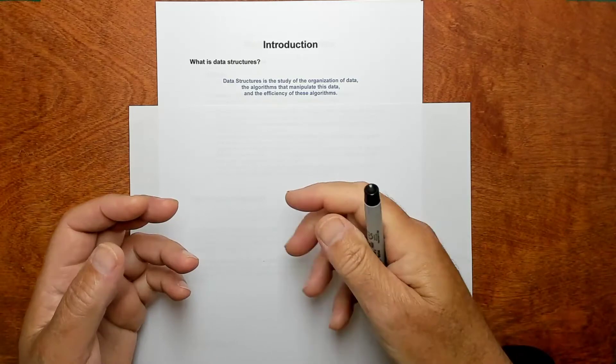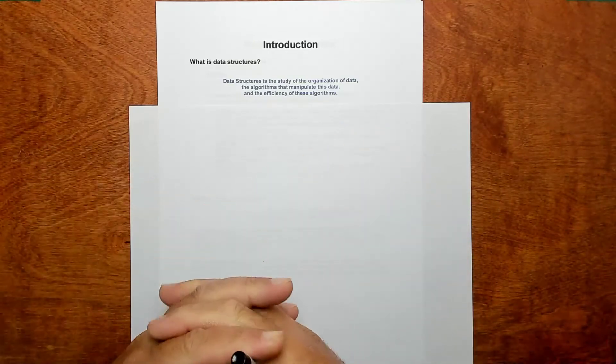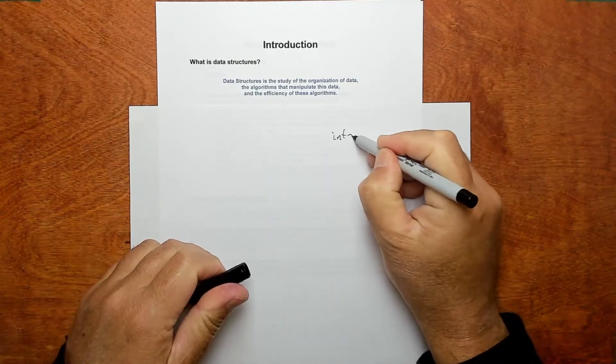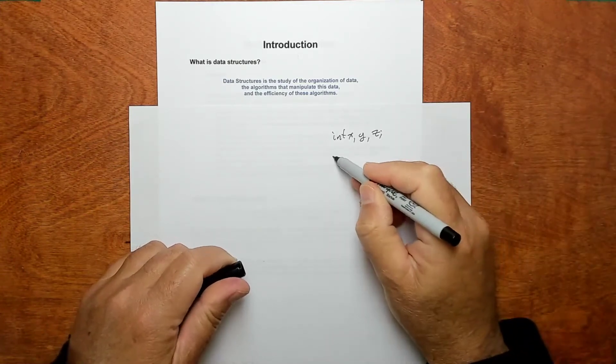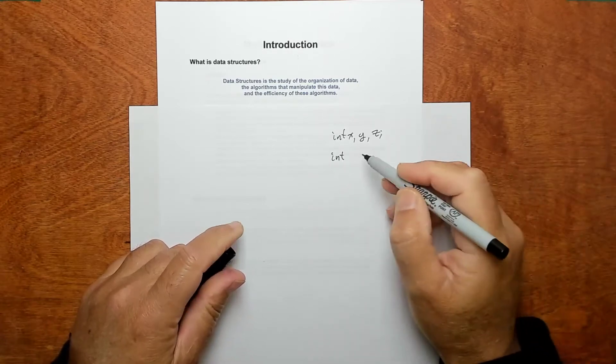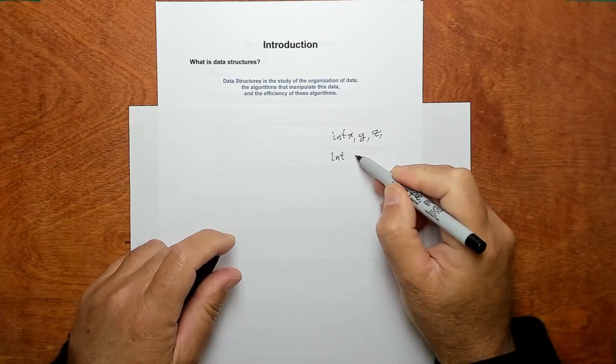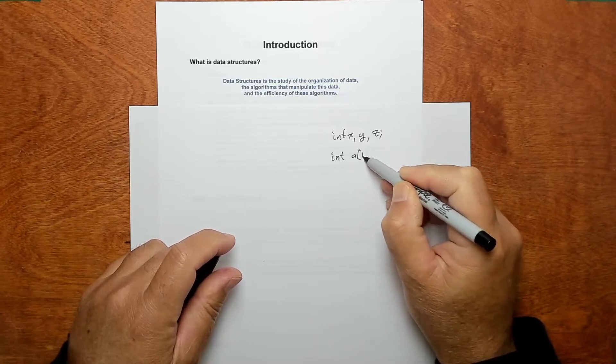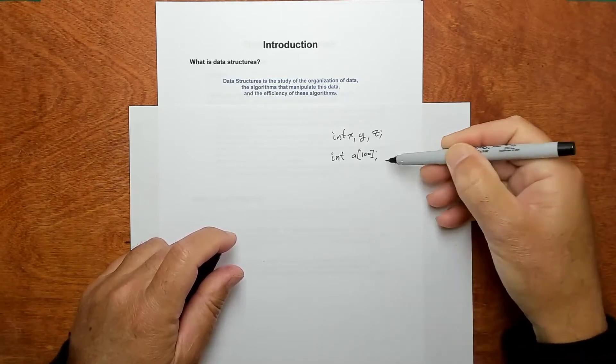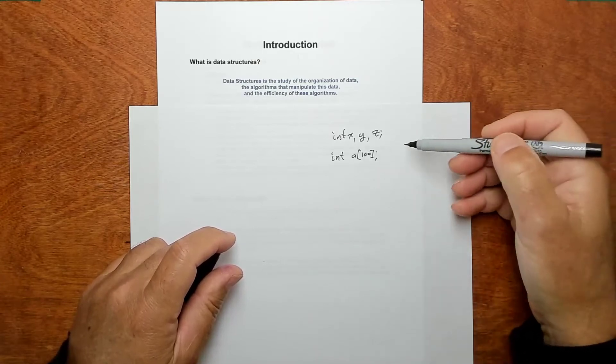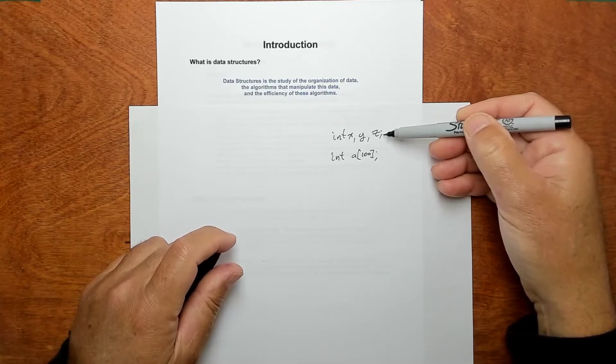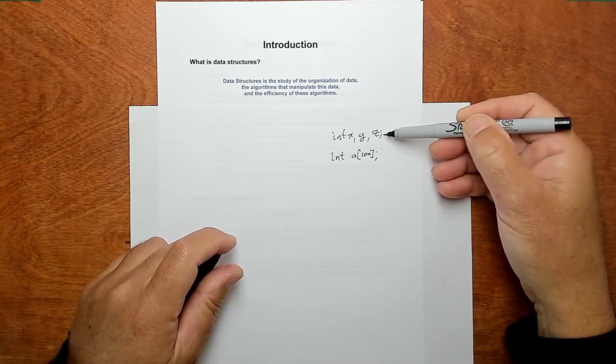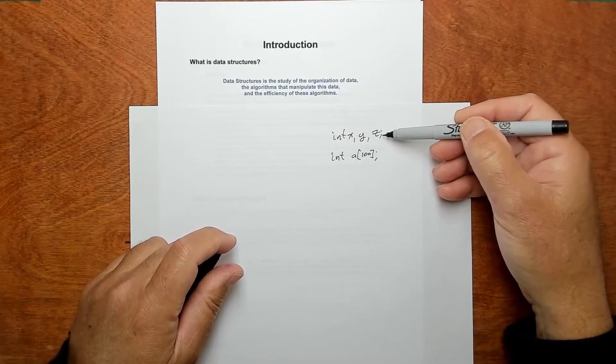What is data structures? Data structures is a lot of things. Here's a nice concise definition. Data structures is the study of the organization of data, the algorithms that manipulate this data, and the efficiency of these algorithms. The simplest way you could organize data is you could just have an open variable. You could just have integer x, and then maybe another one and then another one. That starts to get out of hand.